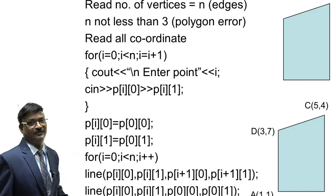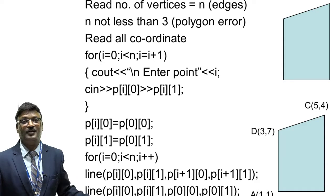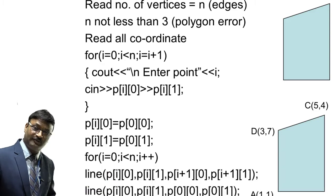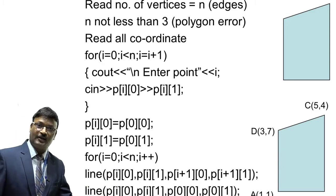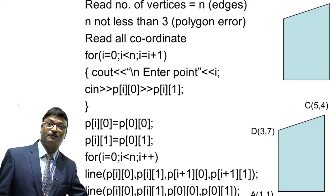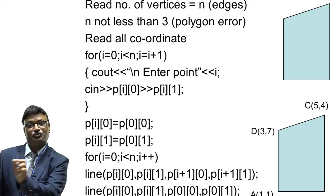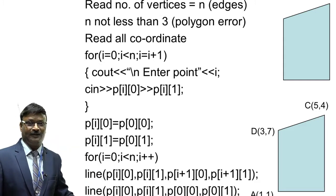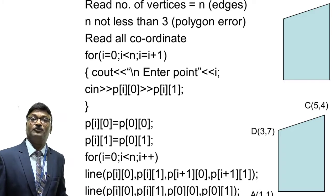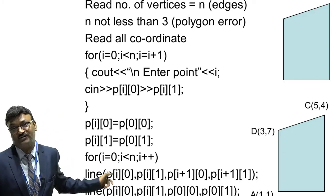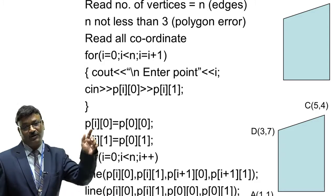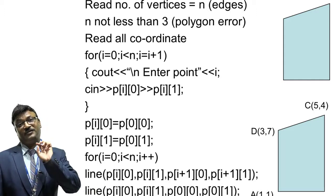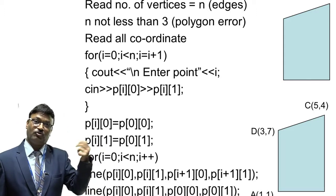Then use another for loop to draw the polygon. How do you draw it? By using the line function — a simple inbuilt line function. For i = 0, i < n, i++, call line(P[i][0], P[i][1], P[i+1][0], P[i+1][1]) — these are the four parameters x1, y1, x2, y2 that you must pass. No curly brackets are needed since it is a single line statement. After the loop, draw a final line from P[i][0], P[i][1] to P[0][0], P[0][1] — last point to first point. This is how you read all coordinates and draw the polygon.